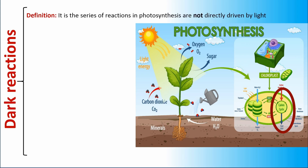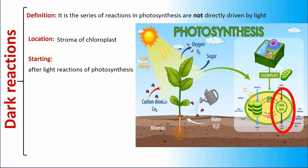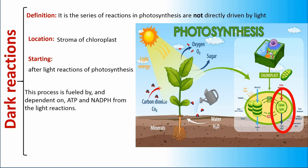Dark reactions are a series of reactions in photosynthesis that are not directly driven by light. Dark reactions occur in the stroma of the chloroplast. These reactions start after the light reactions of photosynthesis, and this process is fueled by and dependent on ATP and NADPH from the light reactions.